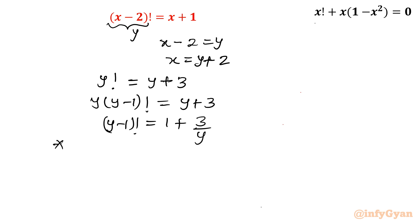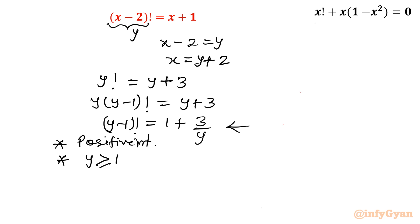Now two things: first, the left-hand side is always a whole number — (y minus 1) factorial will always be a positive integer. Second, y must be greater than or equal to 1; it cannot be negative. On the right-hand side, if y is greater than 3, then 3 over y would be a fractional value. So the condition is y must be less than or equal to 3.